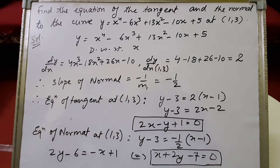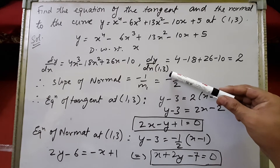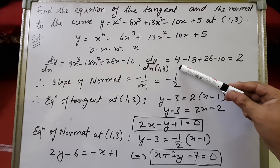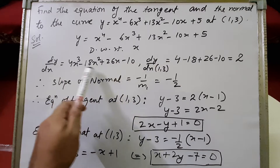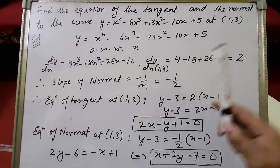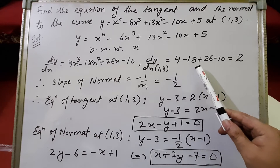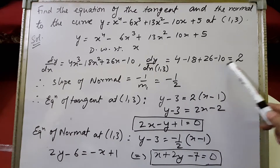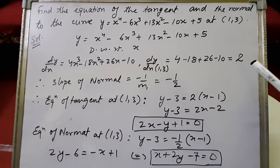We know how to differentiate, and we have to find the slope of the tangent at (1, 3). When we put x equals 1 and y equals 3 here, the value of dy/dx at (1, 3) will become 4 minus 18 plus 26 minus 10, which equals 2. So the slope of the tangent at (1, 3) is 2.